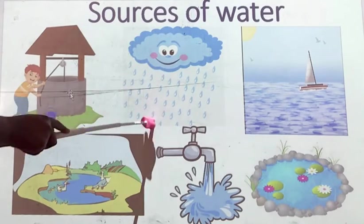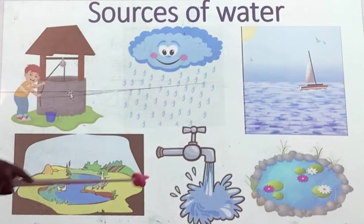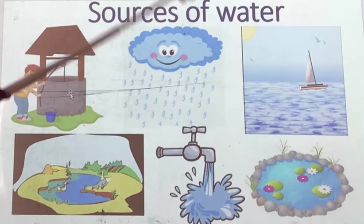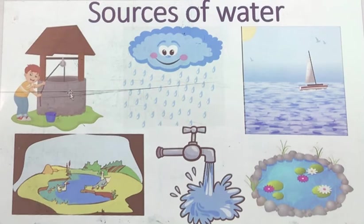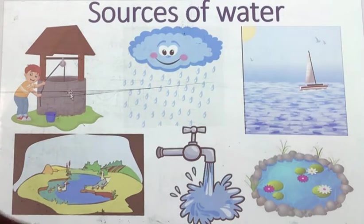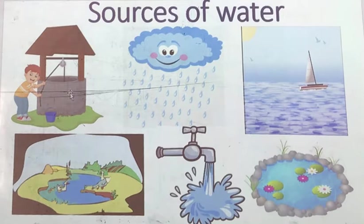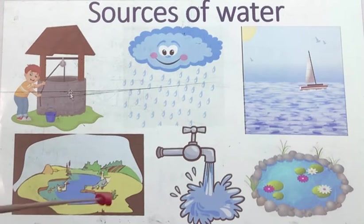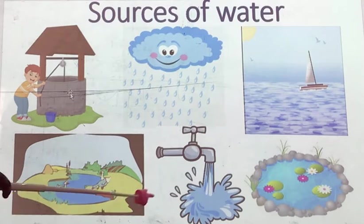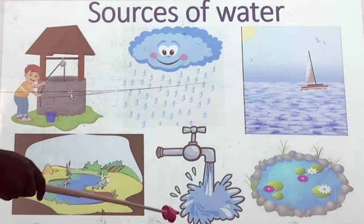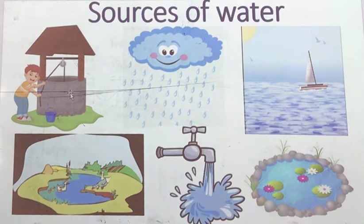Water also comes from rain. When rain pours, we can get water from the rain. We can also see water in the sea and the lakes. Water can also come from the pond. We can get water from the lake or the pond, and we can also get water from the tap.